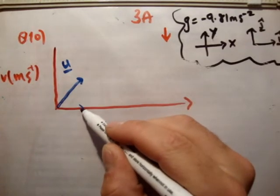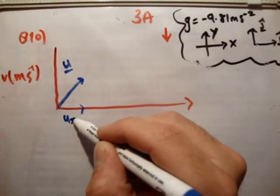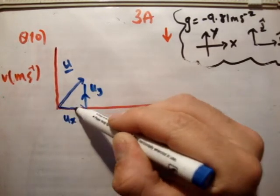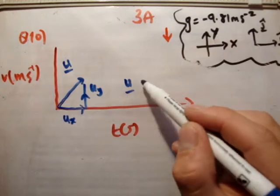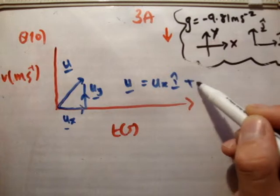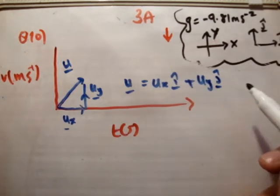So it's made up of two component vectors. This one is u sub x, and this one here is u sub y. Whereby u is equal to u sub x i hat plus u sub y j hat.